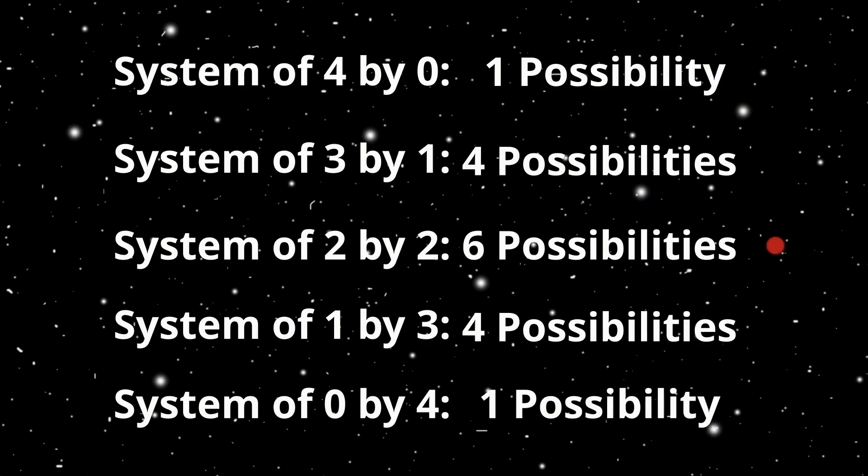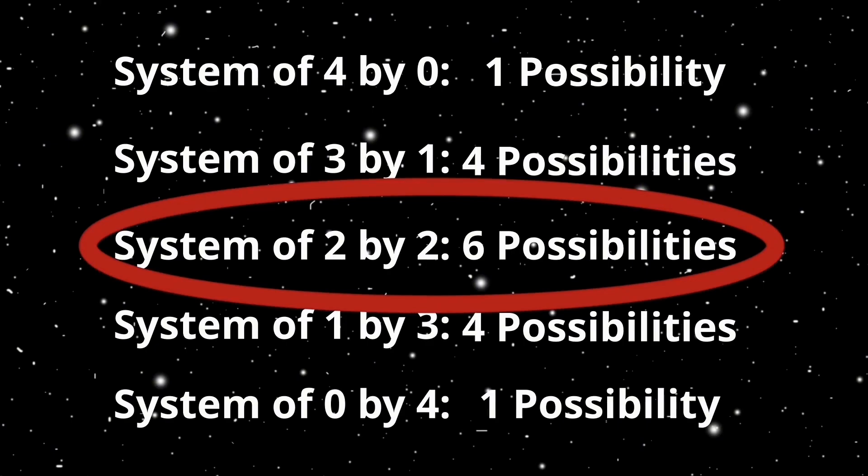Now, the notion of randomness tells us that no single possibility is favored over the other, meaning that they all acquire the same weight of occurrence. So, the state of maximum number of possibilities, multiplicity, will naturally occur.